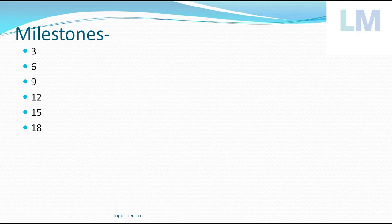For milestones, I have made a small mnemonic to help you easily remember the types of milestones and the age groups. All you have to remember is the number 3 — that is, 3 months — and then apply the 3 times table: 3, 6, 9, 12, 15, 18 months. Everything is described in months.